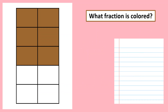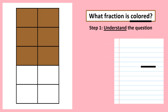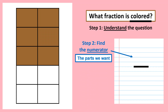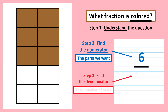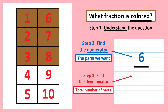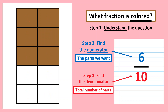On to the next example. We want to find out what fraction of this figure is colored. Step two: find the parts that are colored — there are six of them. Step three: find the denominator, the total number of parts. If you count all of them, you will have ten parts. So you write ten as the denominator.